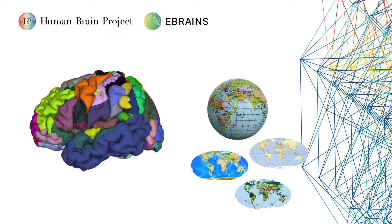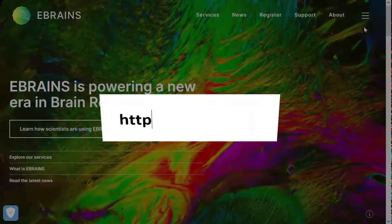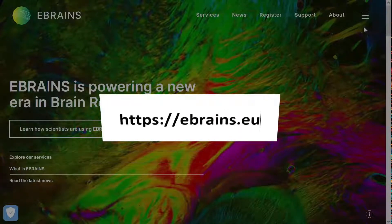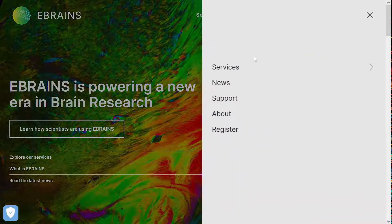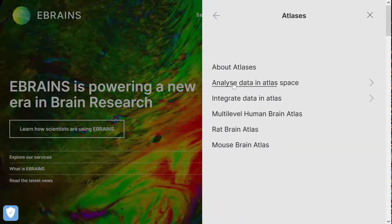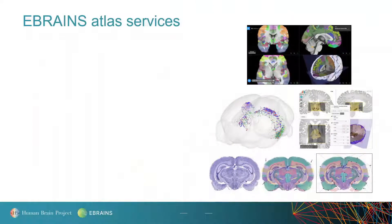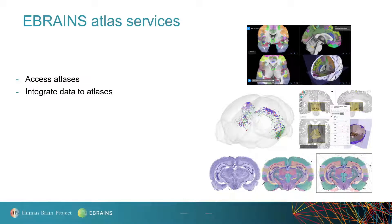eBrains develops open-access 3D brain atlases. One way to work with eBrains' atlases is using our interactive 3D Atlas Viewer, Siibra Explorer, which functions directly in your web browser. You can access the different eBrains atlas services via the web portal at ebrains.eu — simply click on the services category and then on the atlases section. Here you can find many more services for accessing the atlases, integrating data to them, or using them for data analysis and simulation.